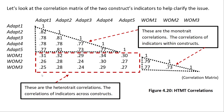The monotrait correlations are the correlations within constructs. For instance, word of mouth has the correlations of word of mouth one, two, and three just within that construct. Same thing for adaptive behavior — it has its own monotrait correlations. So when distinguishing between two constructs, you have two sets of monotrait correlations and one set of heterotrait correlations.